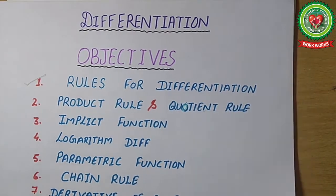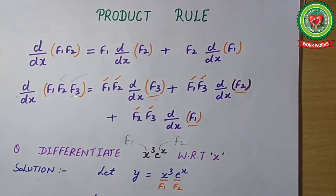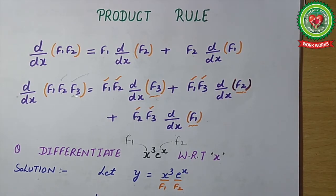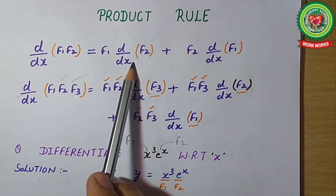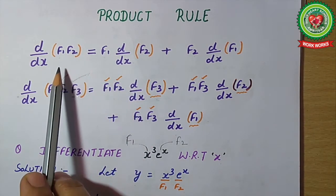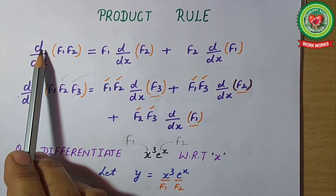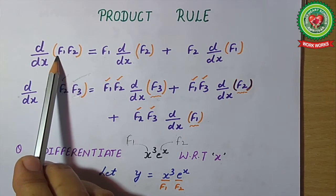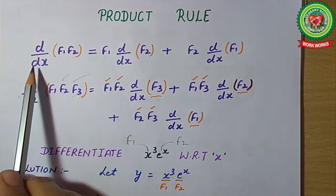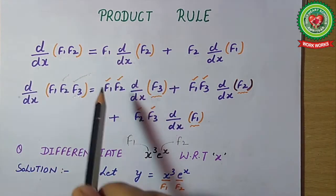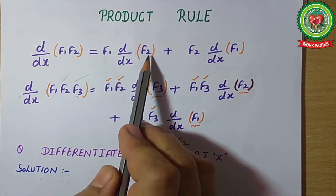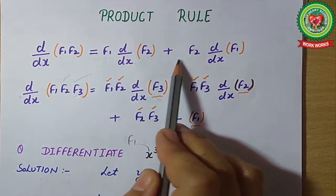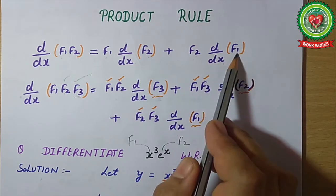As per the name, product rule — product means multiplication. In this rule, two functions or more than two functions are in multiplication form and we have to differentiate that. Let's discuss its formula first. If we want to differentiate f1 and f2, the formula is: f1 times ddx of f2, plus f2 times ddx of f1.